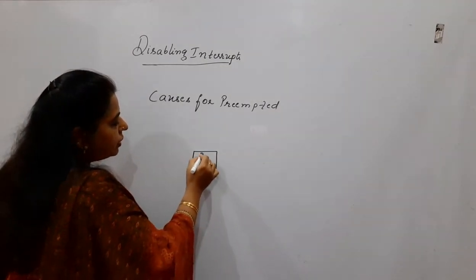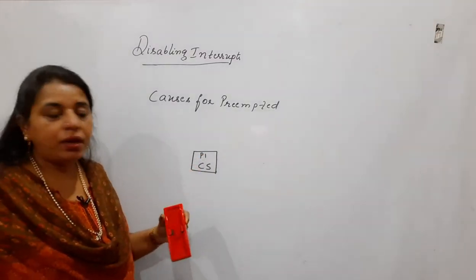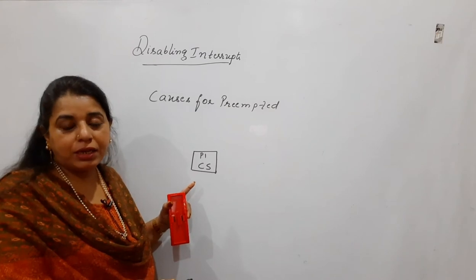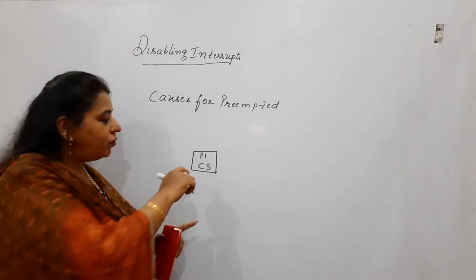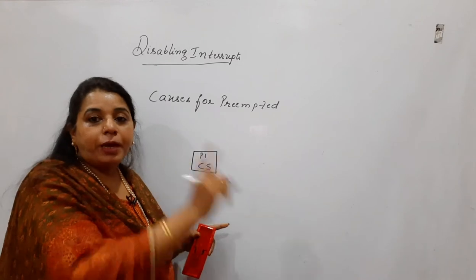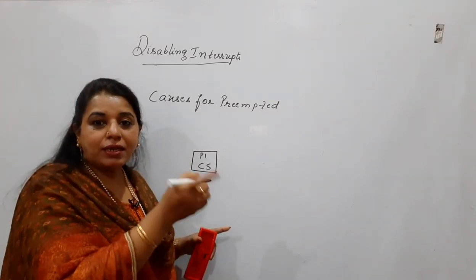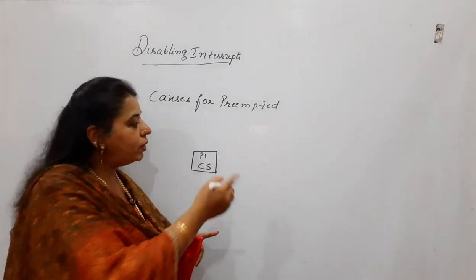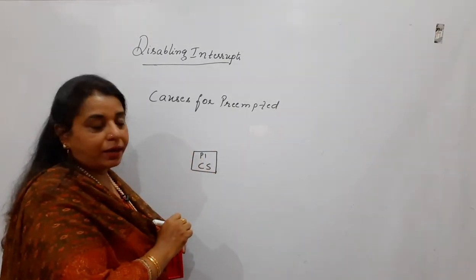Suppose if P1 is trying to enter into the critical section, it will disable the interrupts. There is no question for the process P1 which is currently running to get preempted, because what it has done is it has disabled the interrupts. If the interrupts are disabled, then no other process can enter into the critical section.